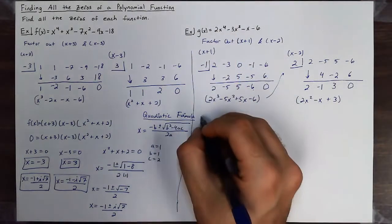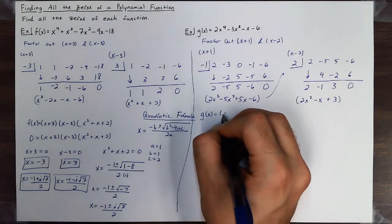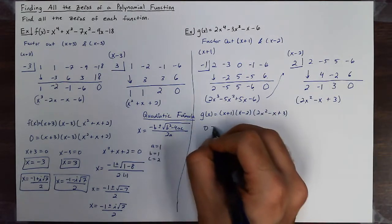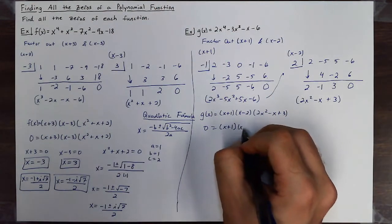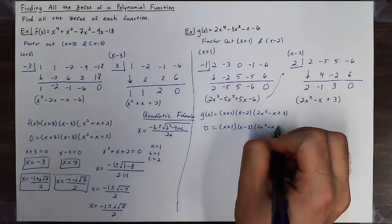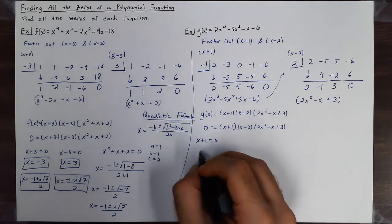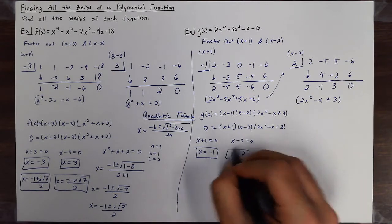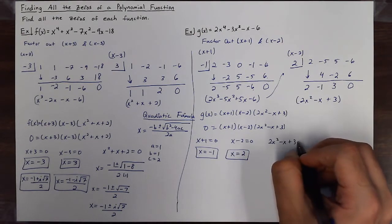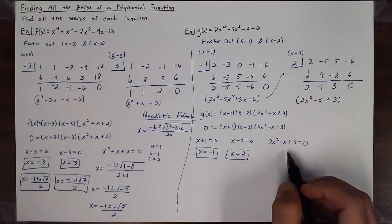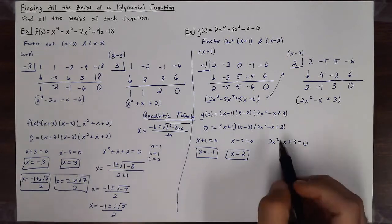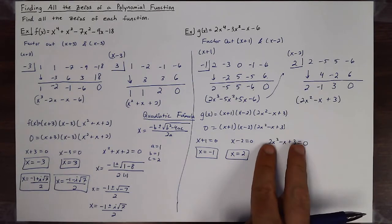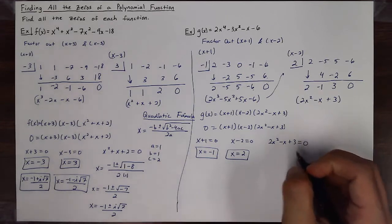So this polynomial factors into (x+1)(x-2)(2x²-x+3), which I can set equal to zero to find all zeros. Setting each factor equal to zero: x plus 1 equals zero gives x equals negative 1; x minus 2 equals zero gives x equals 2. For 2x² - x + 3 = 0, I might try to factor it by finding two numbers that multiply to 6 and add to -1, but that doesn't seem possible, so I'll use the quadratic formula.